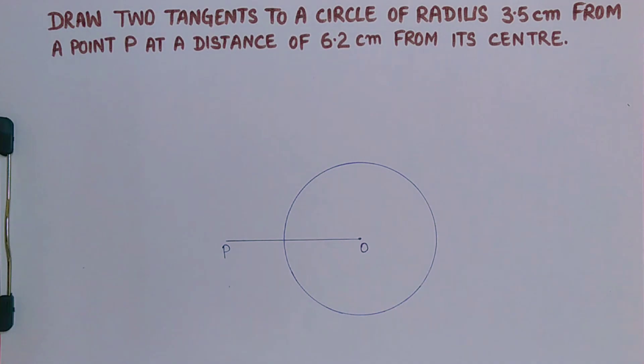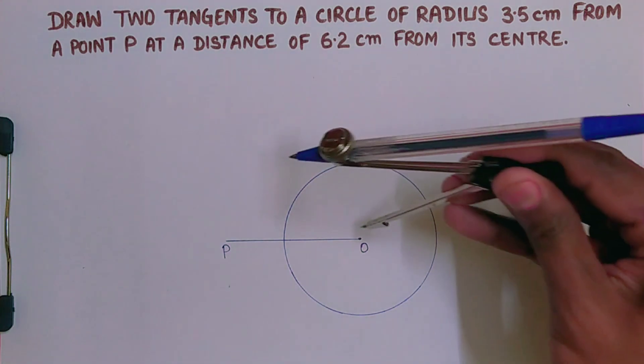Now this OP we have to divide in such a way that we will get two equal parts of OP. So in this case we will bisect the line OP.